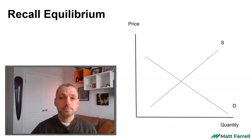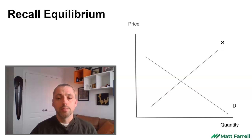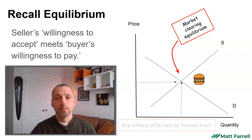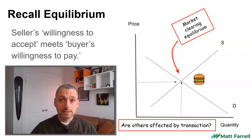A more practical example. If we recall our economic equilibrium — I like Junior Whoppers. I could choose to buy a Junior Whopper at a market price. Typically, the price I'm willing to pay and the price the seller is willing to accept will lead us to make a sale — a successful transaction at the market clearing equilibrium. But are others affected by that transaction? Are there any other externalities associated with that? Well, there are lots.